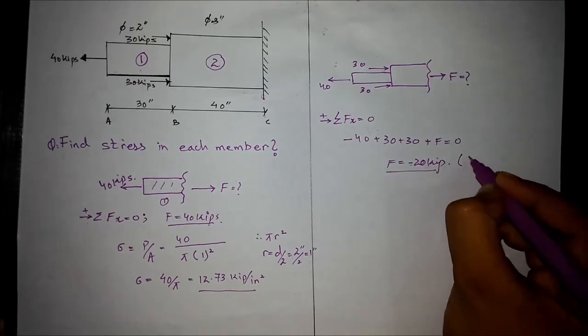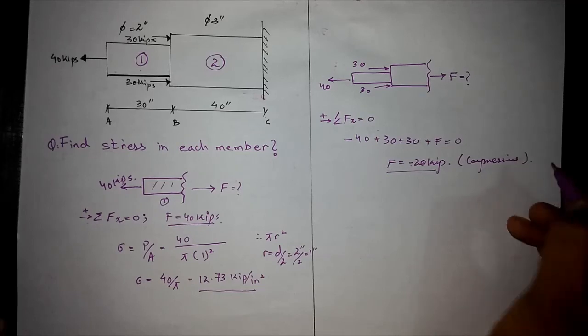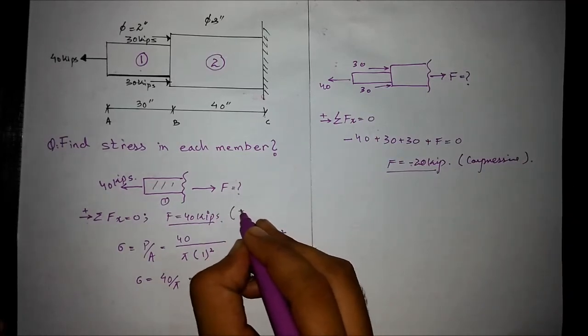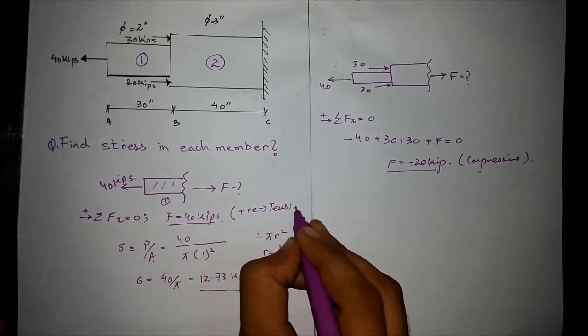The negative sign shows that it is a compressive member. If it had a positive sign, then it would be a tensile member.